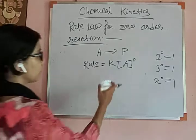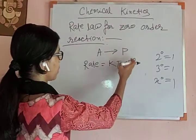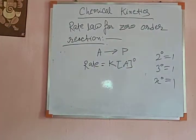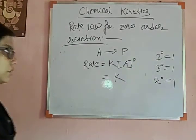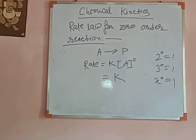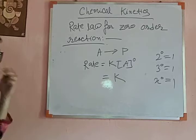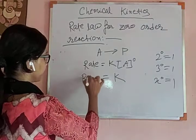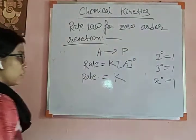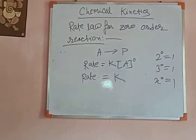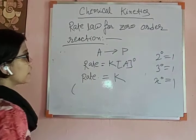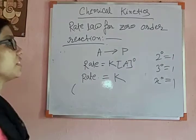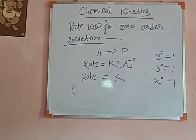So if we are writing a zero order reaction and zero goes to the power of the reactant concentration, then it becomes equal to K, that is the rate constant. So rate is equal to the rate constant. You can say that a zero order reaction is independent of the reactant concentration.